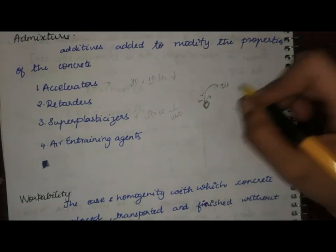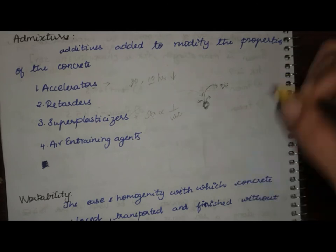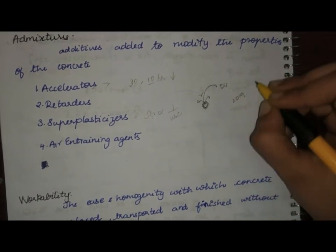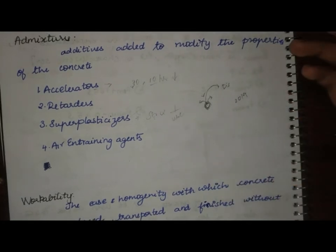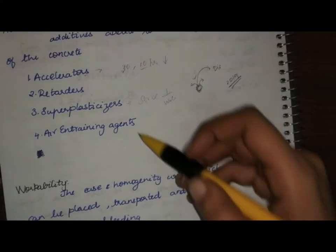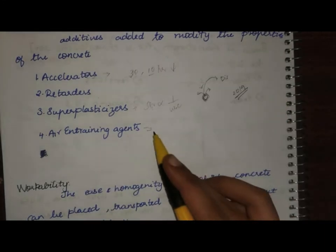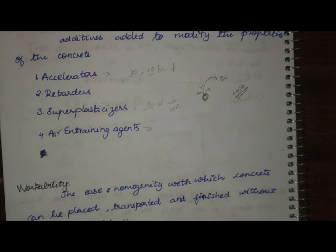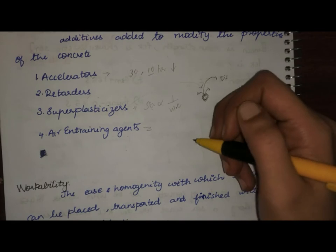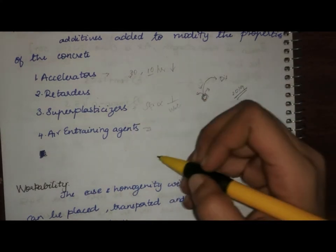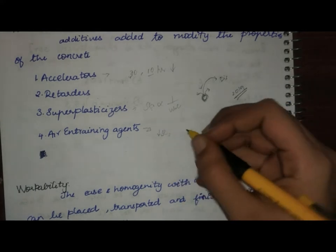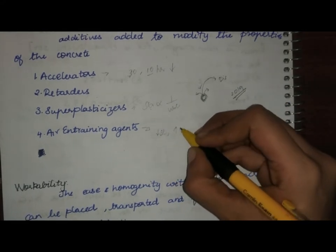In case you don't know how to design a mix design based on the 2019 code, I have links in the description below for both M20 and M40 mix design. Next is air entraining agents. These are not used widely in India but are used throughout the world in cold weather regions. Unlike super plasticizers, air entraining agents will reduce strength slightly but increase durability.